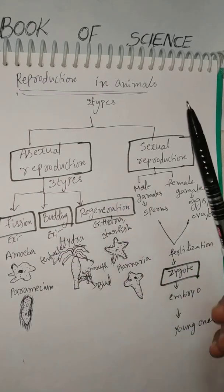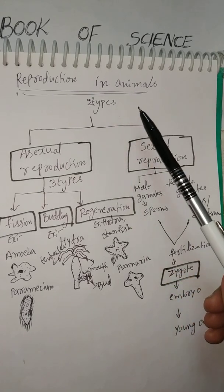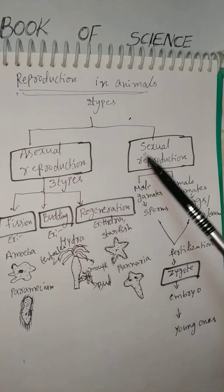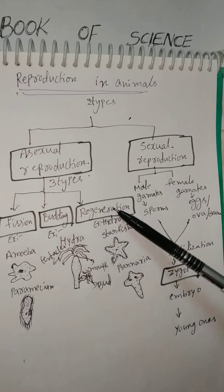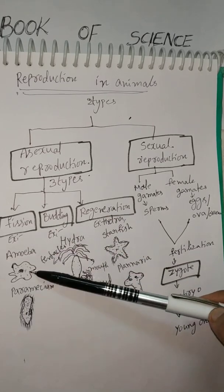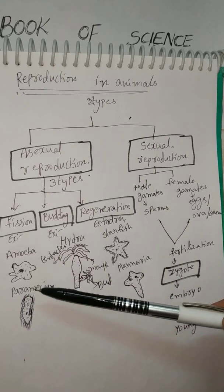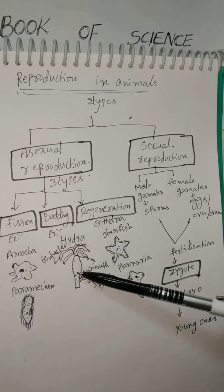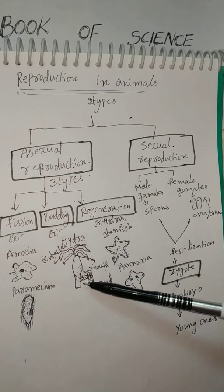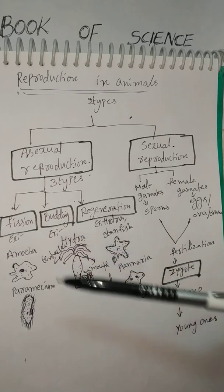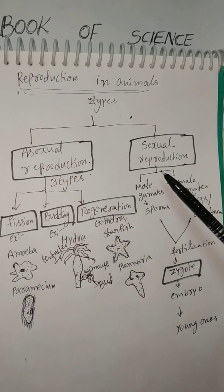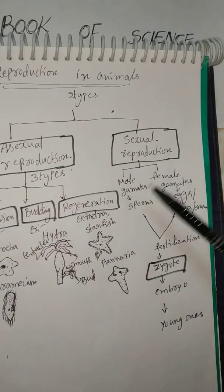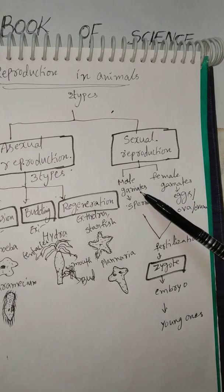Once again we repeat: Reproduction in Animals is of two types — asexual reproduction and sexual reproduction. Asexual reproduction is further divided into three types: fission, budding, and regeneration. Fission example: Amoeba — a single-celled animal. Another example is Paramecium. Budding example: Hydra — a multicellular water animal that gives rise to a bud. Regeneration examples: Hydra, Starfish, and Planaria. Sexual reproduction has two types of gametes: male gametes (sperms) and female gametes (eggs, ova, or ovum).